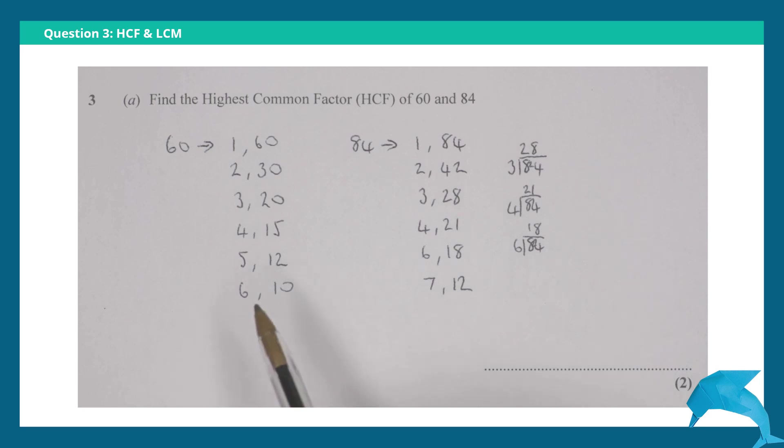So finding the highest common factor, the largest that is in both of these lists. 60 not here, 30 not here, 20 not here, 15 not here. 12 is in both! The highest common factor of 60 and 84 is 12. That's 2 marks for part a.